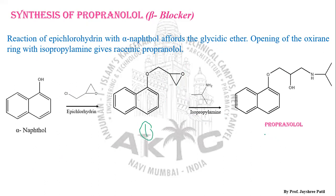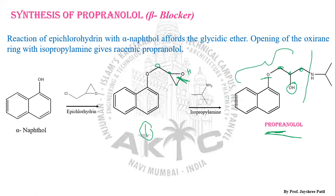When isopropyl amine reacts with structure one, we ultimately get the resulting product, propranolol. The oxygen remains, then CH2 remains the same. On this specific carbon, the epoxide ring breaks down, giving an OH group. Adjacent to this carbon there is another carbon. So this half portion comes from structure one, and this portion comes from isopropyl amine.